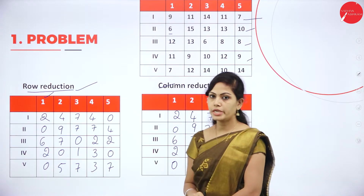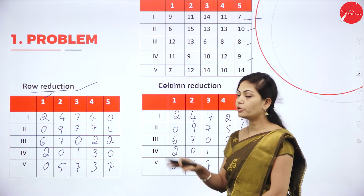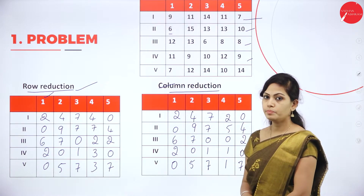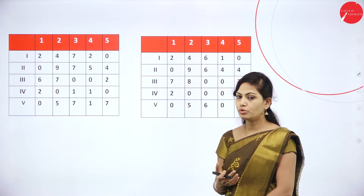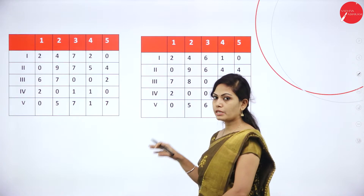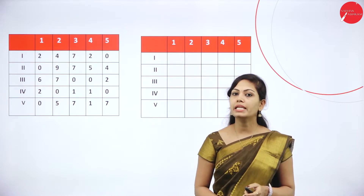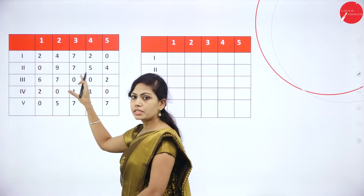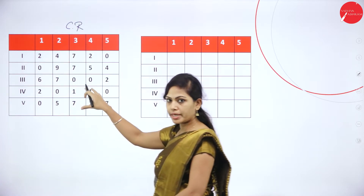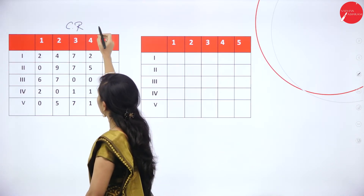I hope you have understood the concept of row reduction and column reduction. The next step is to find the optimal solution using this column reduction matrix. For finding the optimal solution we have two steps: row scanning and column scanning. I will take this column reduction value for finding both the row scanning and column scanning.